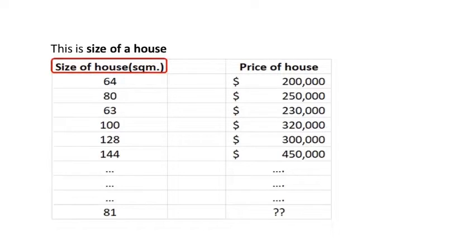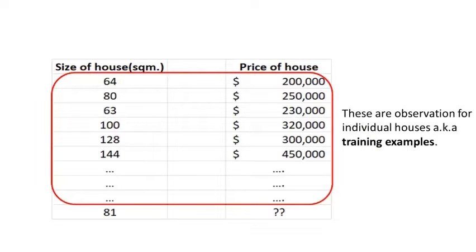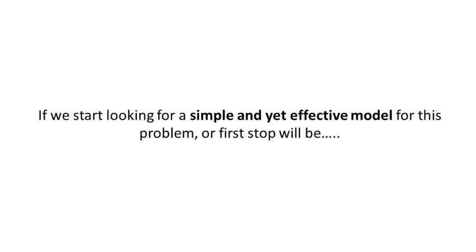Let's look at an example. This is size of a house and this is corresponding price of that house. These are observations for individual houses, also known as training examples. Now we want to know price of a new house, which will be output of our model, based on its size, which is input. We start looking for a simple and yet effective model for this problem.